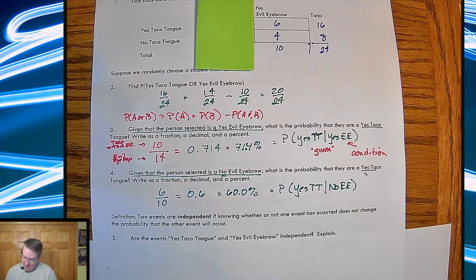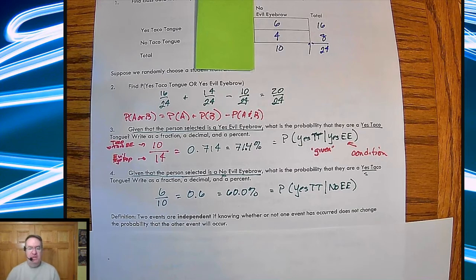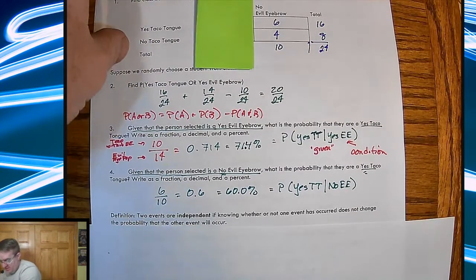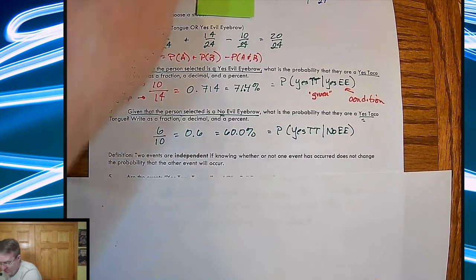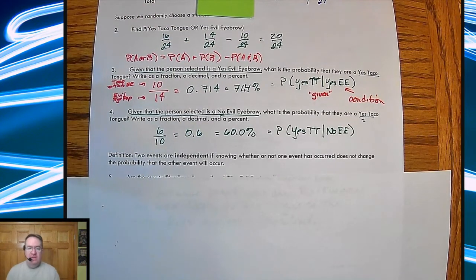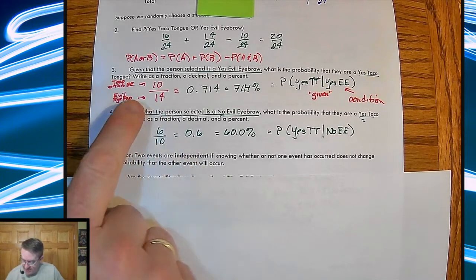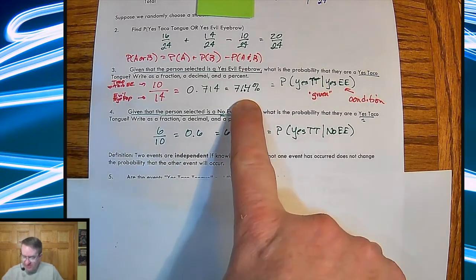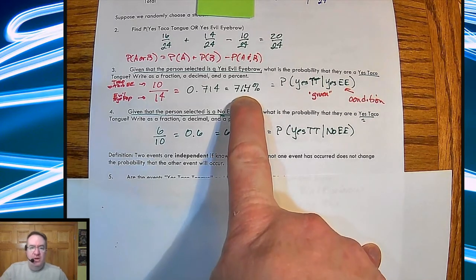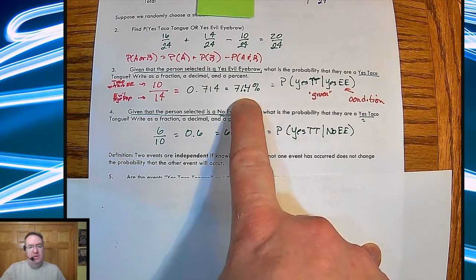So the definition of independence means that if knowing whether or not one event has occurred does not change the probability of what's going on. If you know that one event has occurred or you don't, you're still going to get the same probability that the second event occurred. And so because of that, here, we're going to look up here.